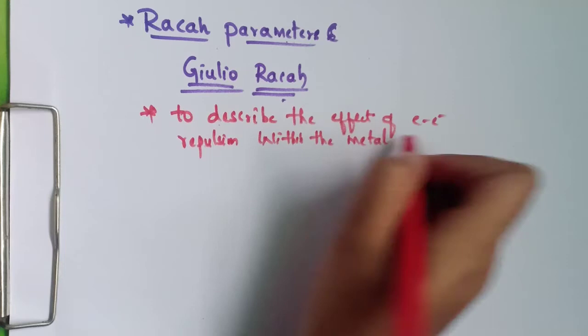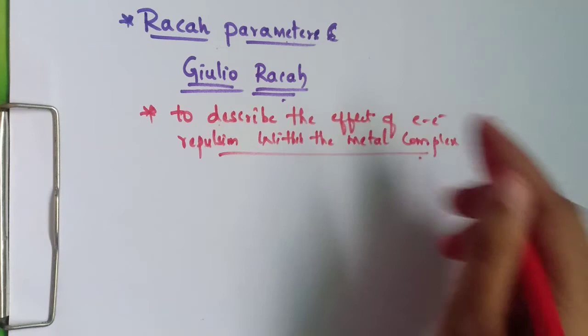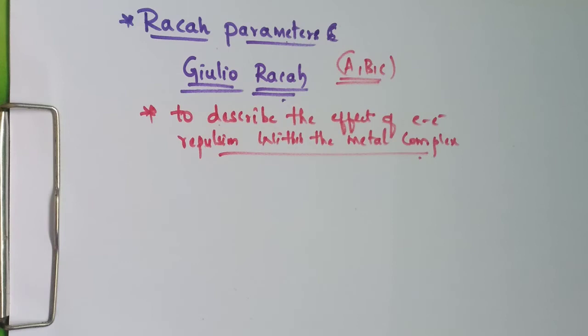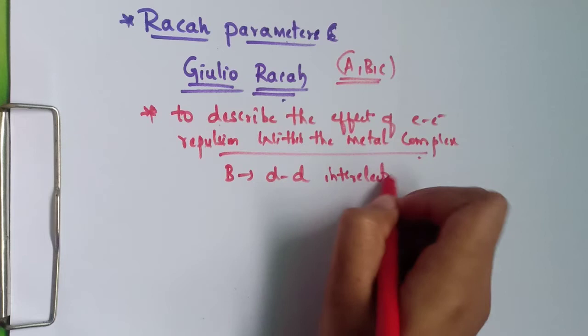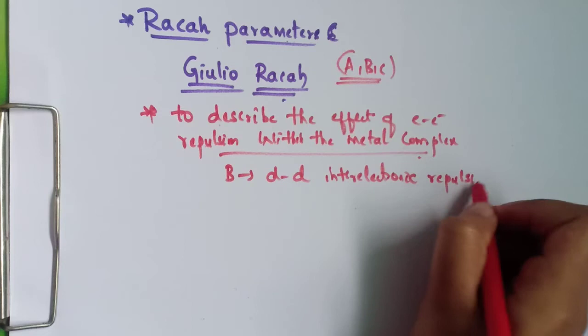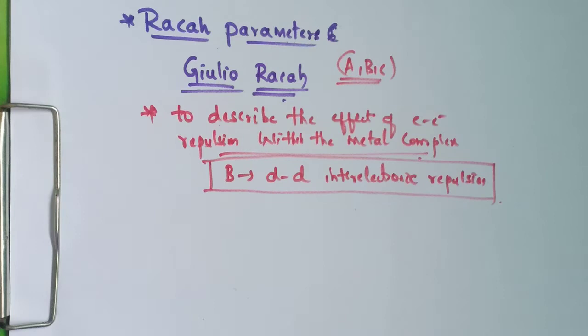There are A, B, and C Racah parameters, but we use only the B parameter because B gives the dd inter-electronic repulsion. We need only the dd inter-electronic repulsion, so we use this Racah B parameter.